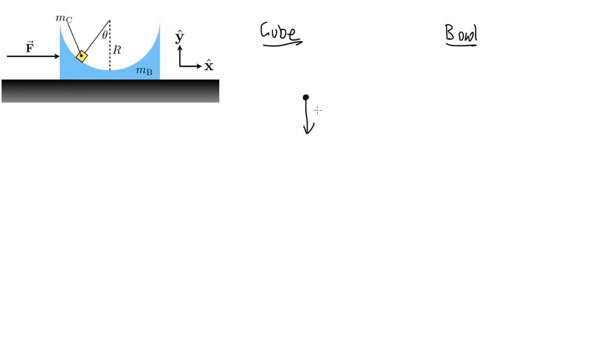Well, there's a weight on the cube, mc times gravity. And there's a force from the bowl on the cube. Now the thing is, with this force, we don't know the angle. But we can leave it as an unknown. It's known through the powers of algebra. There's my angle theta as defined.